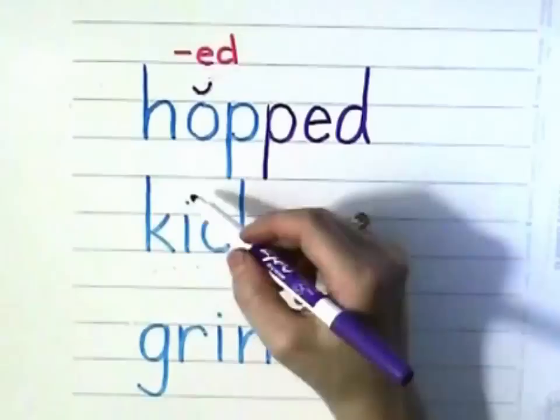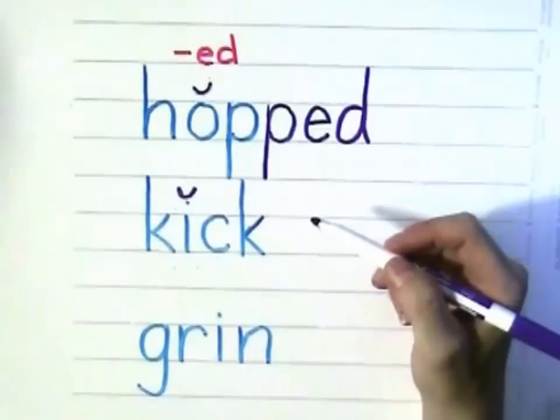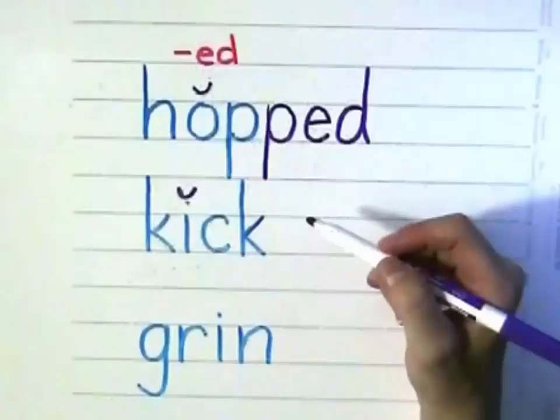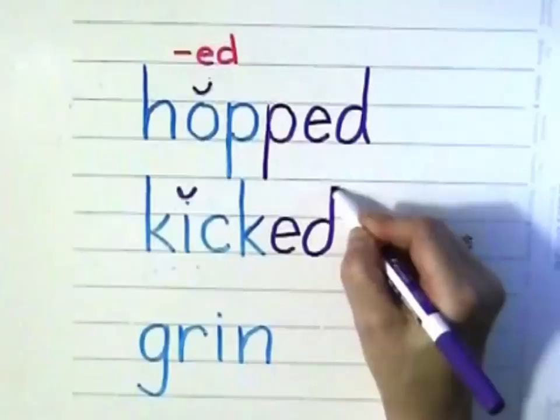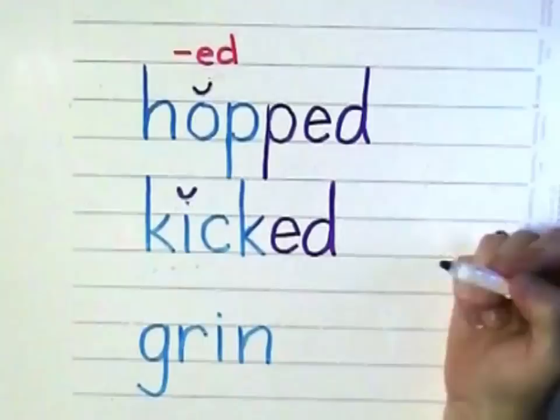Let's look at "kick." Here's our short vowel, the I. How many letters do we need before we add ED? Yes, we need two. Do we have them? C and K? Yes, those are two consonants, so we can add ED. We do not need to add another K — three consonants would be completely unnecessary.